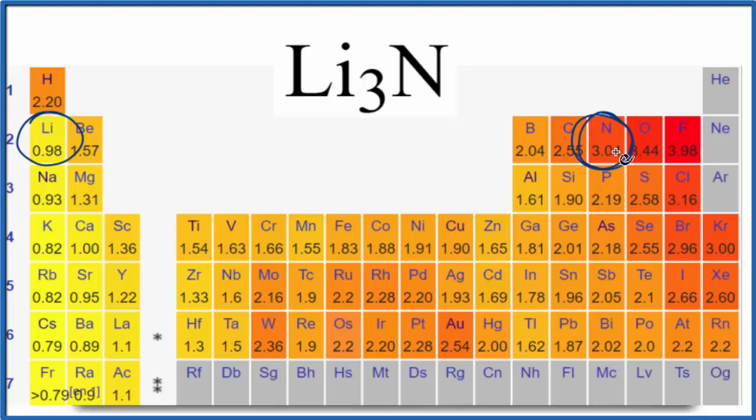When the difference between the elements is greater than 2.0, which is the case here, then it's an ionic compound.